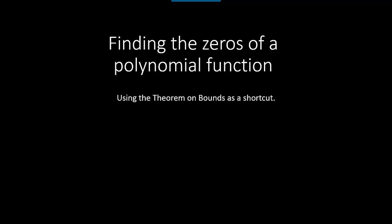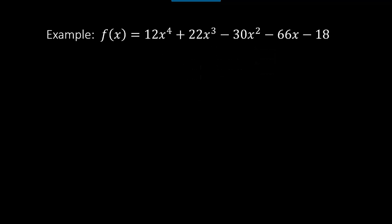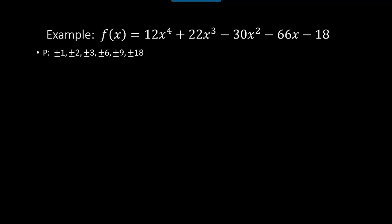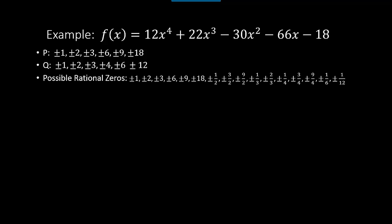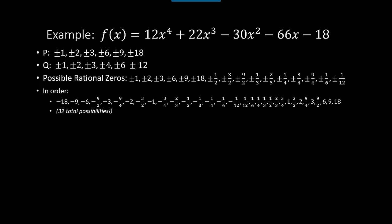Our goal here is to find the zeros of a polynomial function. Our function is f(x) = 12x⁴ + 22x³ − 30x² − 66x − 18. This is degree 4, so we should expect to find four zeros. We begin with our rational zeros theorem, looking at p factors — factors of −18 — and q factors — factors of 12 — making every possible ratio p/q. In this particular example the list is very long: 32 total possibilities.